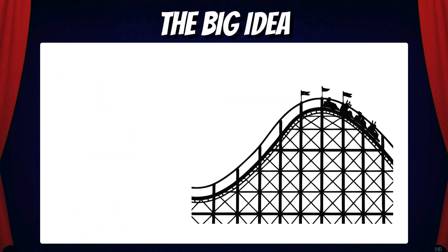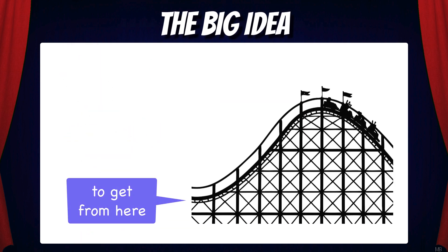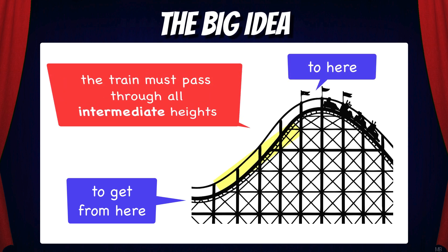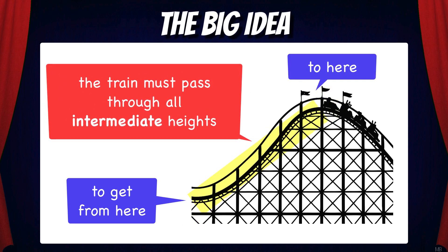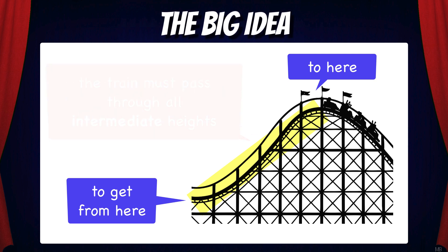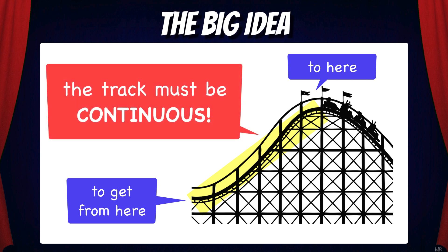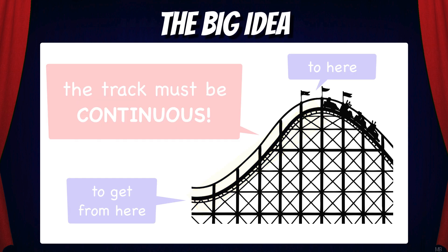Suppose we have a roller coaster. In order for the train to get from the bottom of the hill to the top of the hill, it must pass through all of the intermediate heights. The train doesn't just magically start at the bottom and instantly appear at the top — it has to travel through all of the intermediate heights. And in order to do this, the track must be continuous.